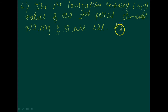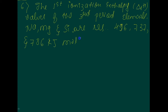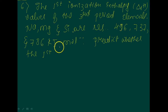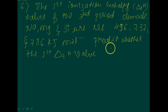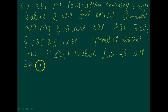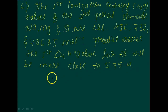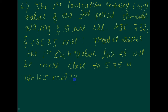...respectively 496, 737, and 786 kilojoule per mole. Predict whether the first ionization enthalpy (delta H) value for aluminium will be more close to 575 or 760 kilojoule per mole. Justify your answer.